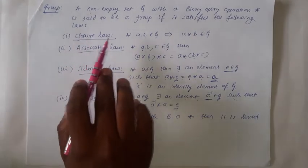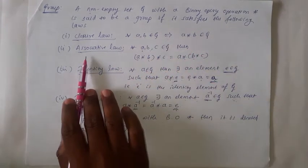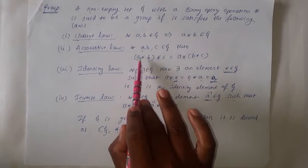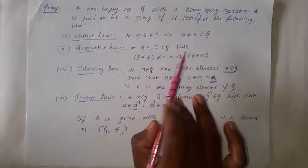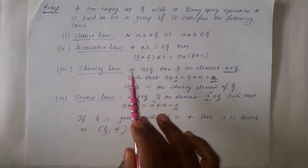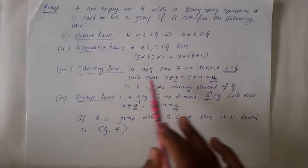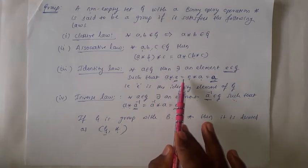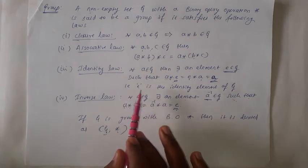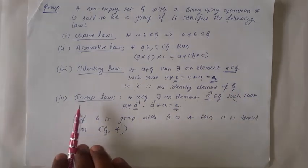The first one is the Closure law: for all a, b belonging to G, it implies a star b belongs to G. Then the Associative law: for all a, b, c belonging to G, (a star b) star c is equal to a star (b star c). The third one is the Identity law: for all a belonging to G, there exists an element e belonging to G such that a star e is equal to e star a is equal to a, so that small e is the identity element of the set G.